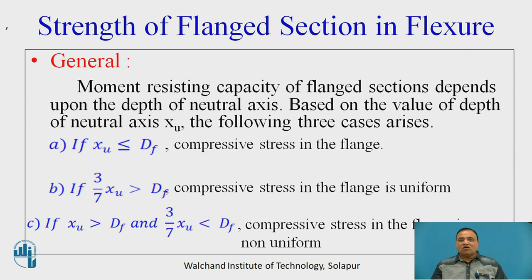If 3 by 7 Xu is greater than Df, compressive stress in the flange is uniform. If Xu is greater than Df and 3 by 7 Xu is less than Df, then compressive stress in the flange is non-uniform.